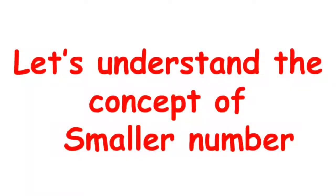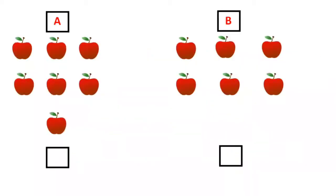Let's understand the concept of smaller number. Here we can see 2 sets of apples. Now let us count how many are there in each set. Let's count set A: 1, 2, 3, 4, 5, 6 and 7.